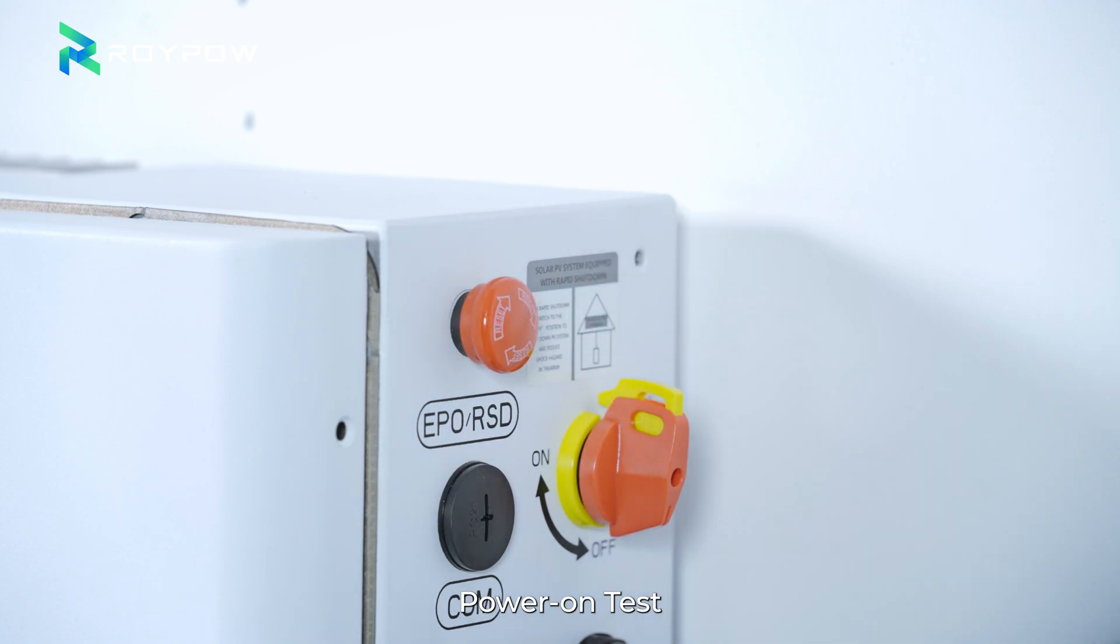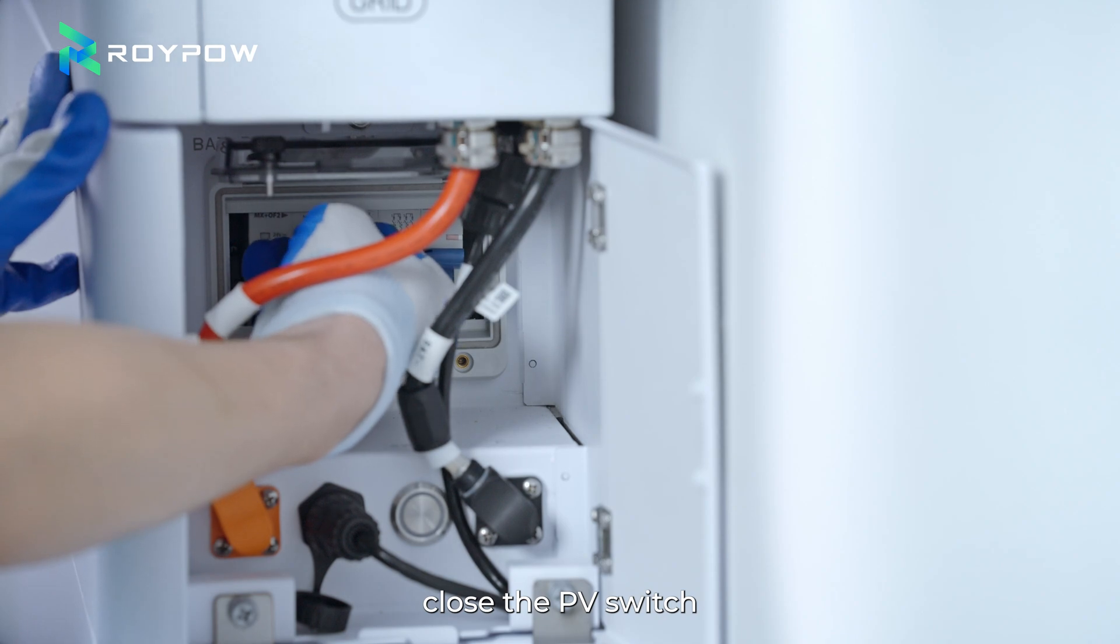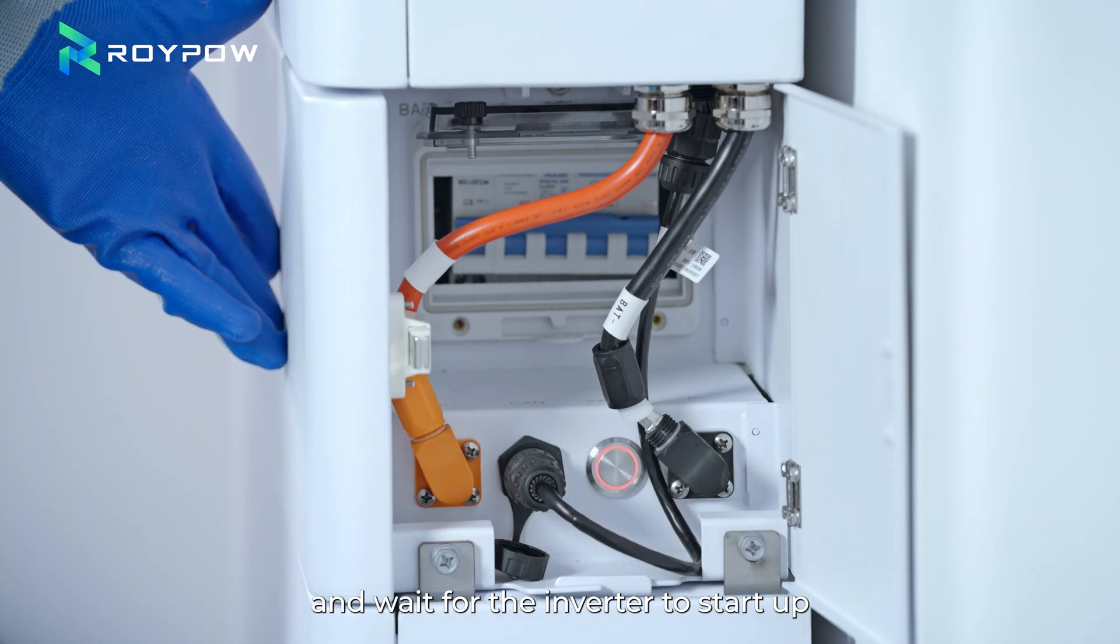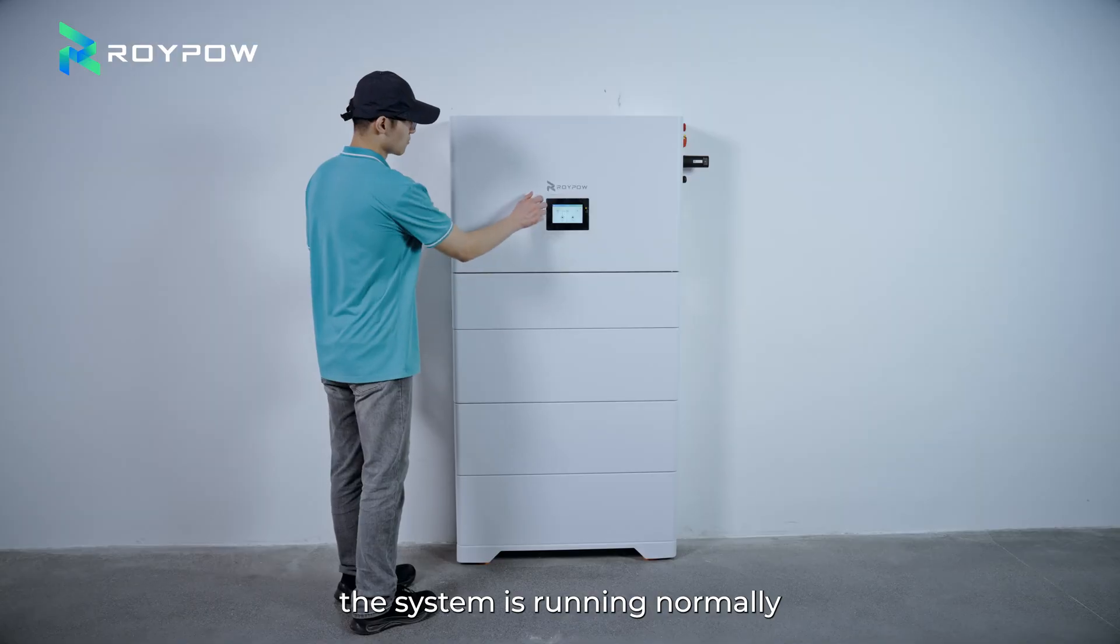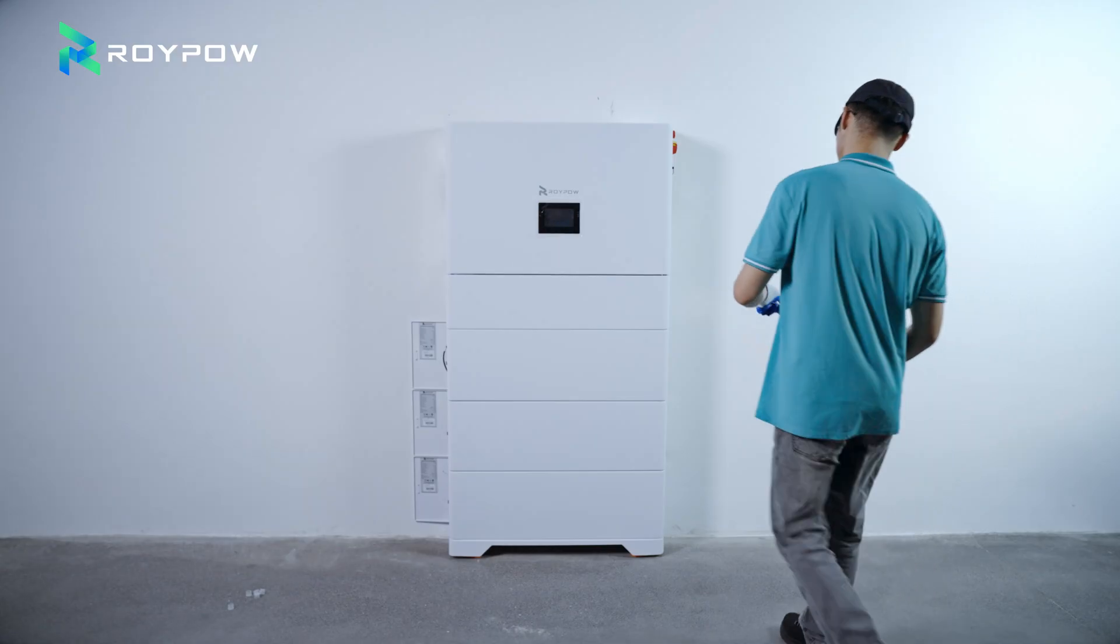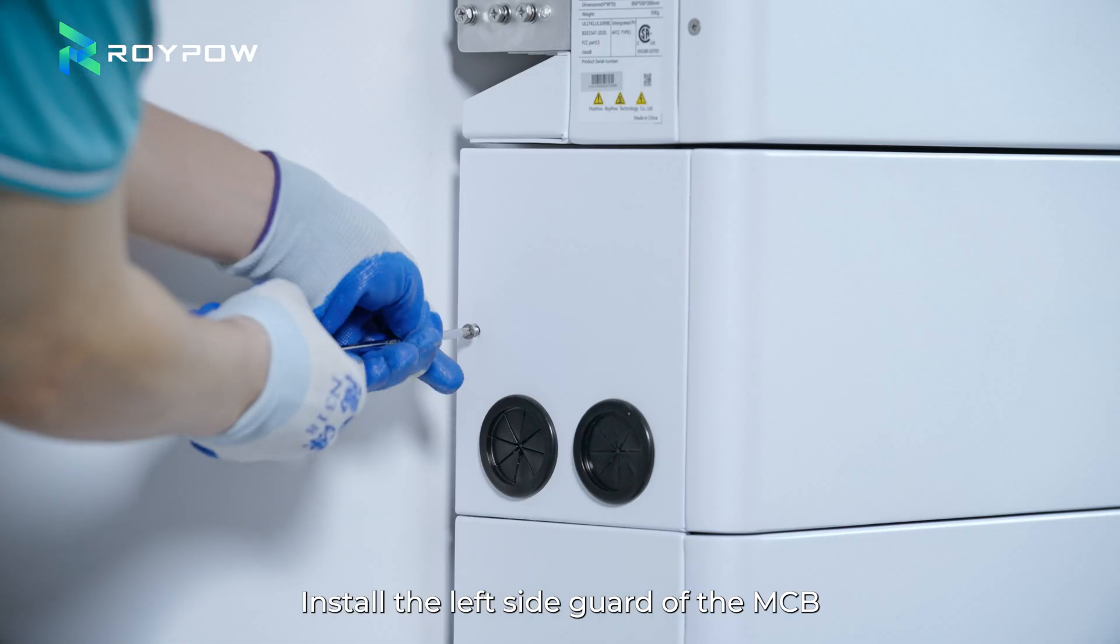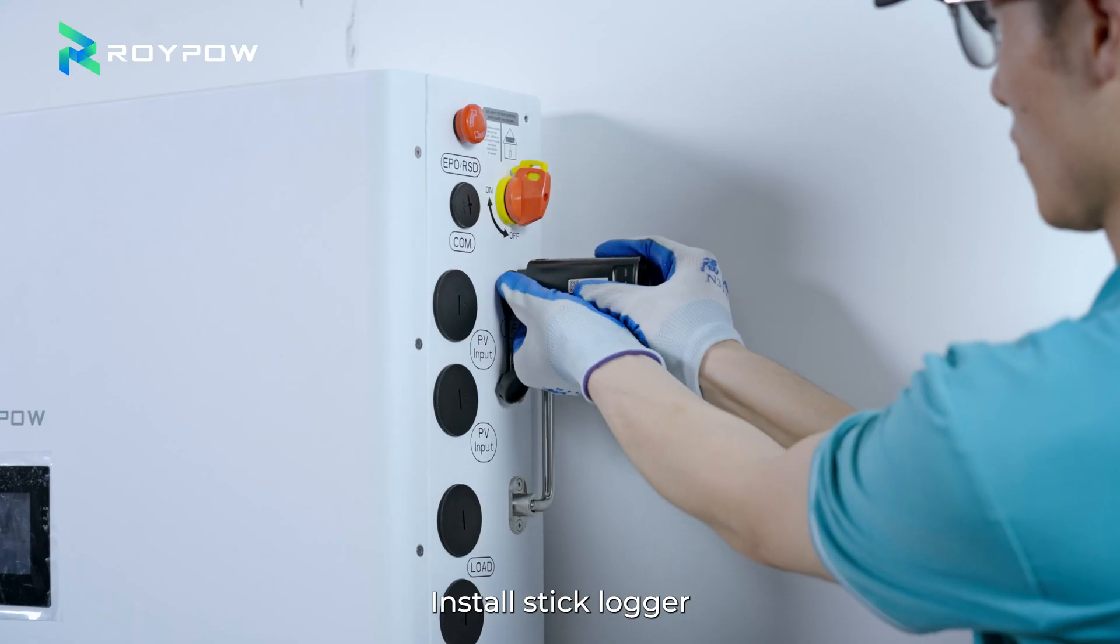Power on test. Release the emergency stop button clockwise, close the PV switch, close the circuit breaker, press the activation button for 5 seconds, and wait for the inverter to start up. When the screen lights up, the system is running normally. Install the right side cover of the battery. Install the left side guard of the MCB. Install stick logger.